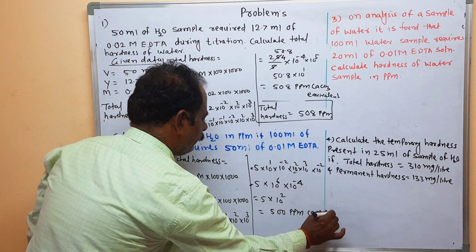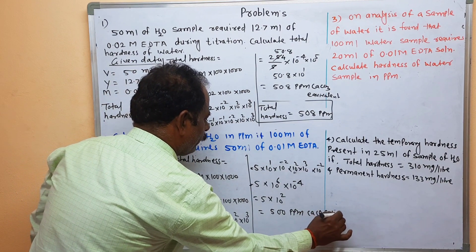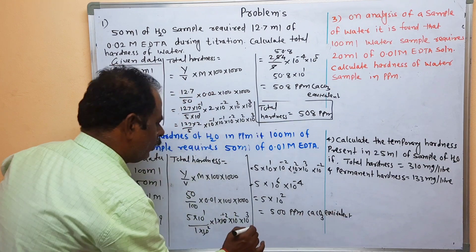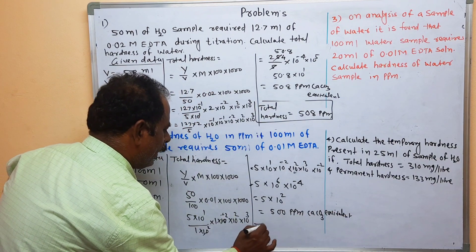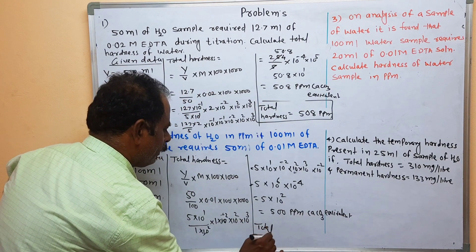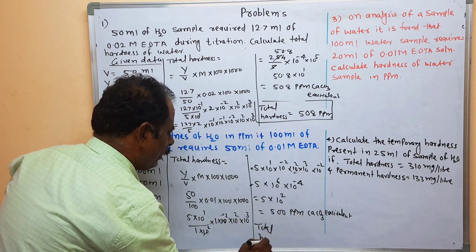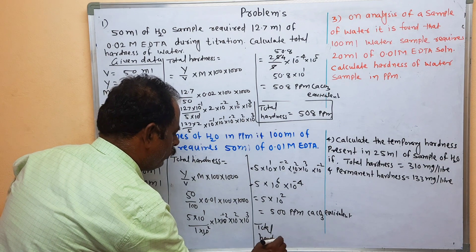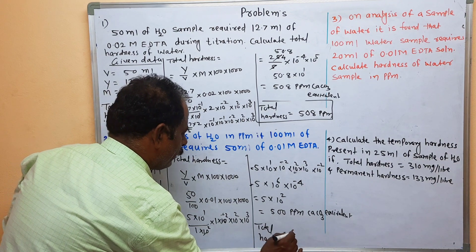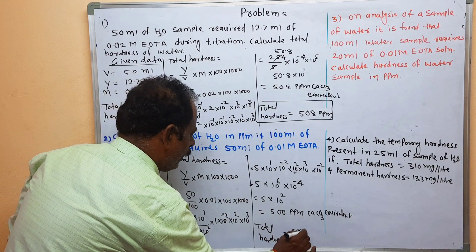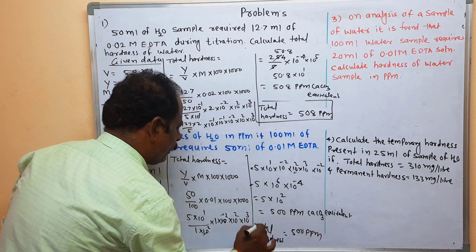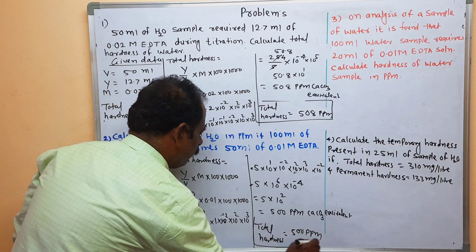The hardness in the water is 500 ppm — 500 parts per million.